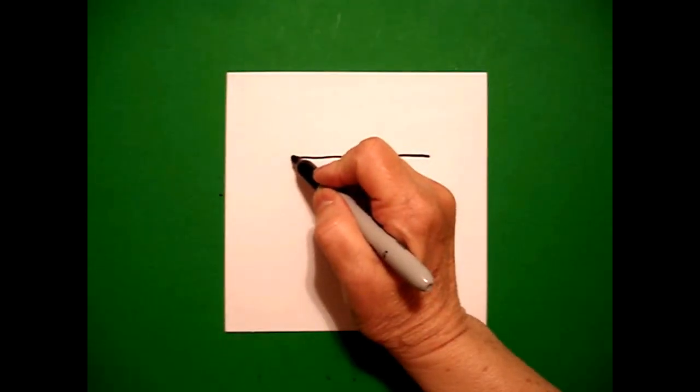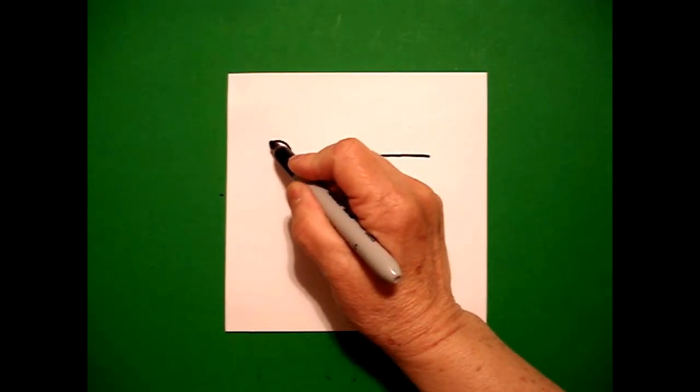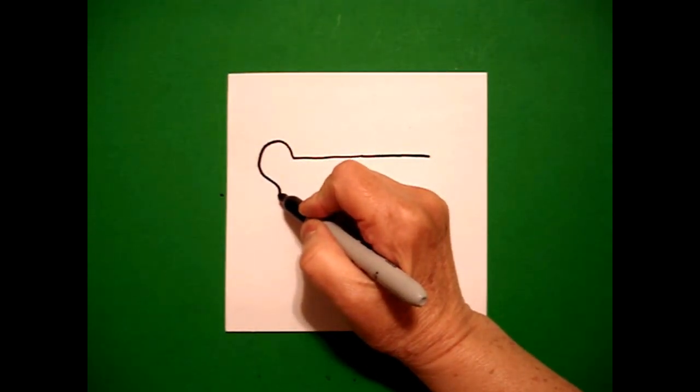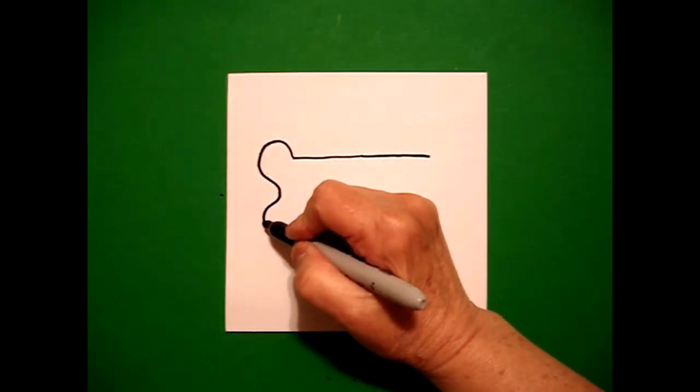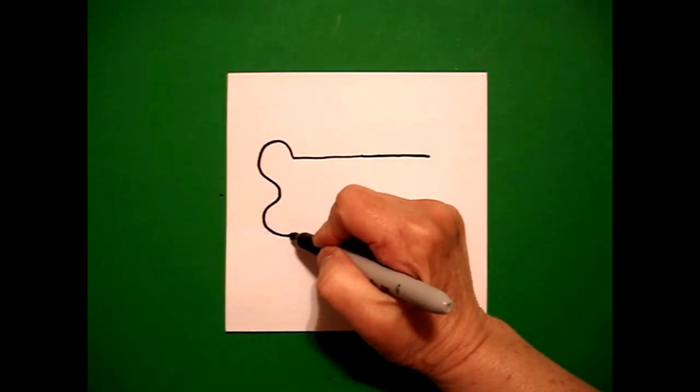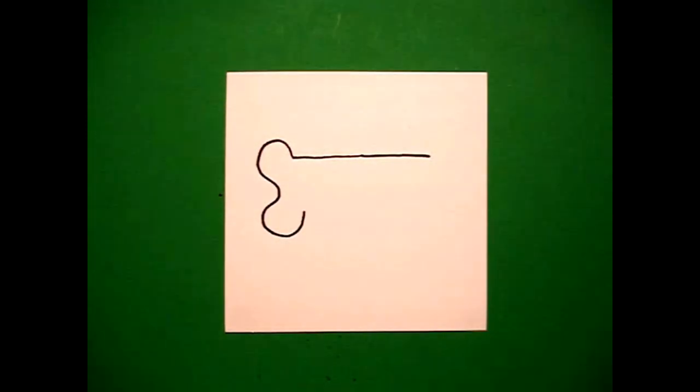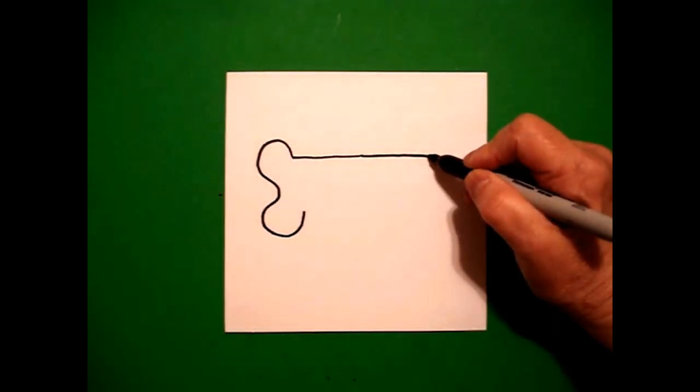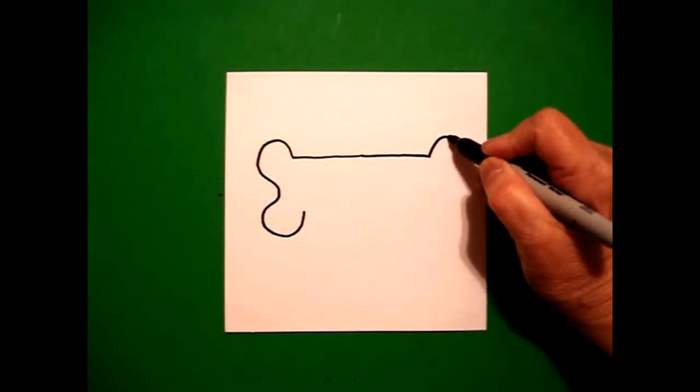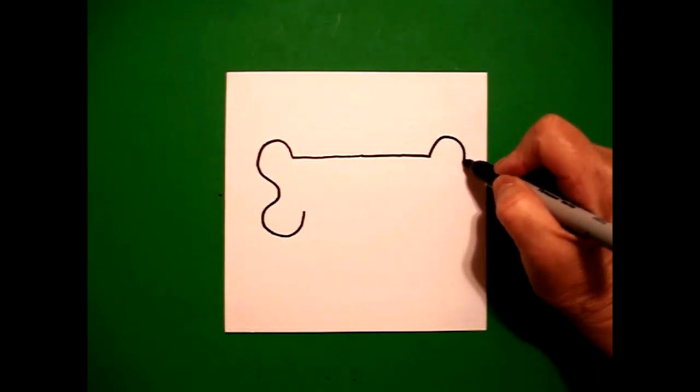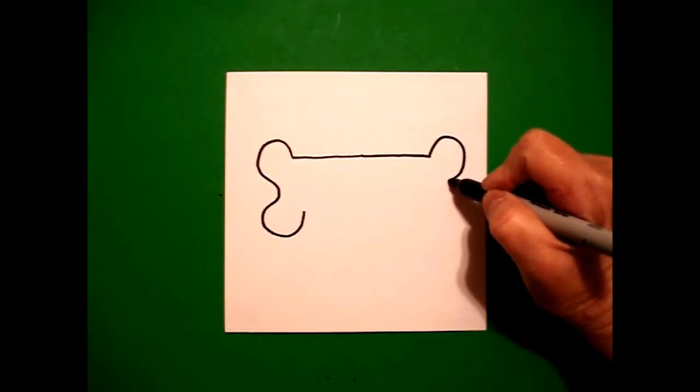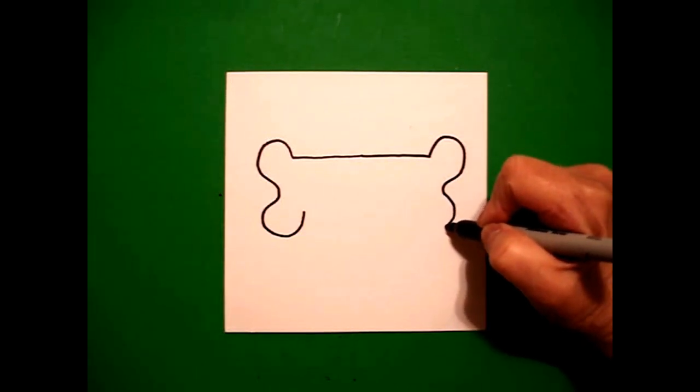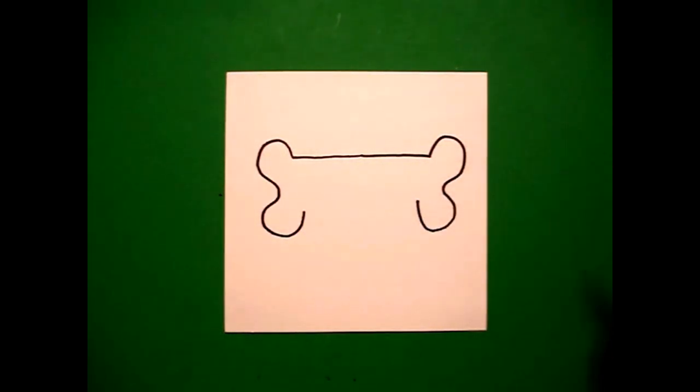Right here at the left I'm going to draw a big curve line up, curve line in, curve line out, curve line up. I come over to the right hand side and I'm going to draw a curve line up, curve line down, curve line in, curve line out, curve line up.